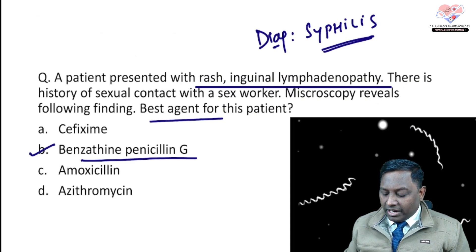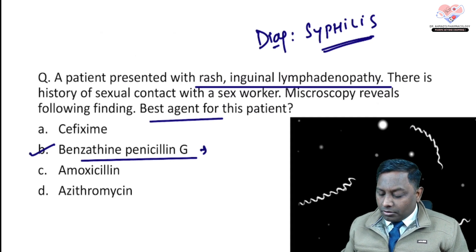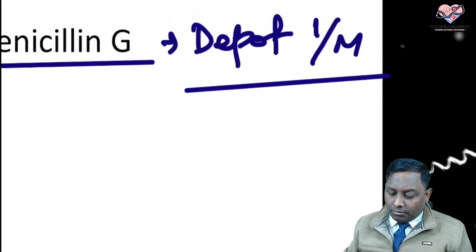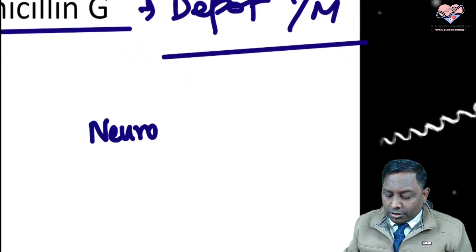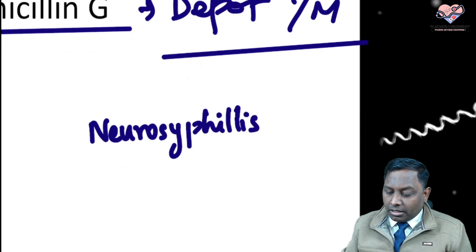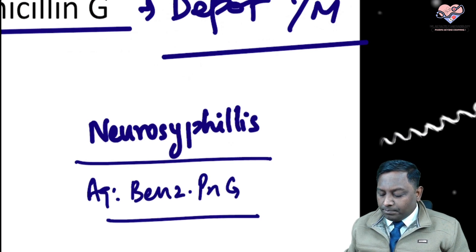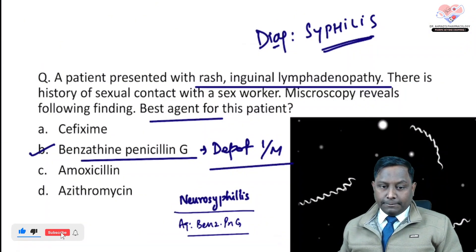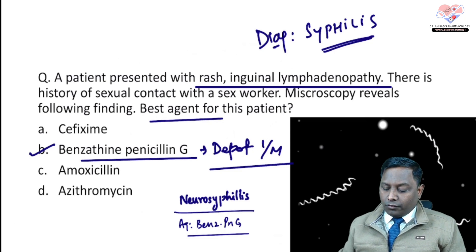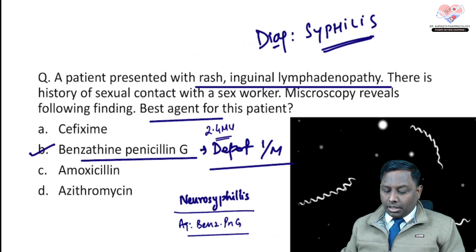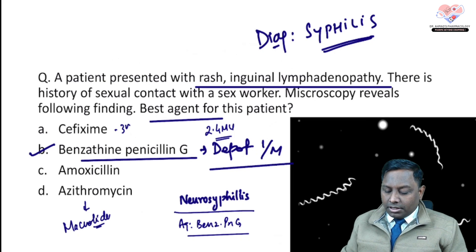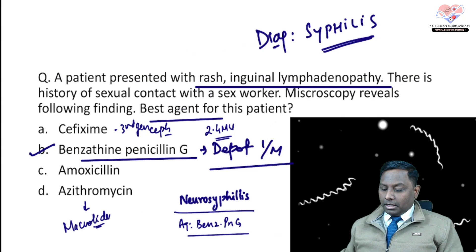Benzathine penicillin G is given as an intramuscular depot preparation. However, for neurosyphilis, we also use penicillin G, but the preparation changes to aqueous penicillin G and the dose changes as well. In the usual case of syphilis, we use 2.4 million units. The other options — amoxicillin (a penicillin), azithromycin (a macrolide), and cephalexin (a third-generation cephalosporin) — are not the best choice here.